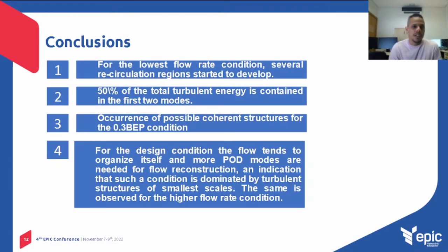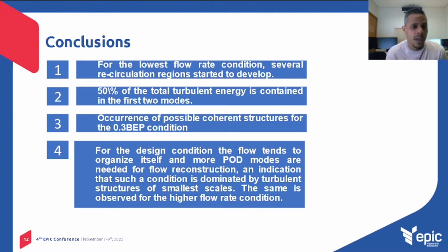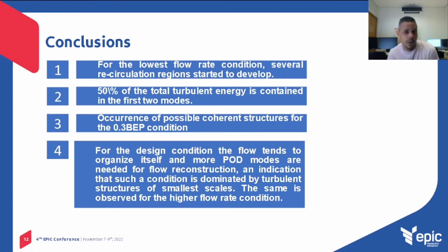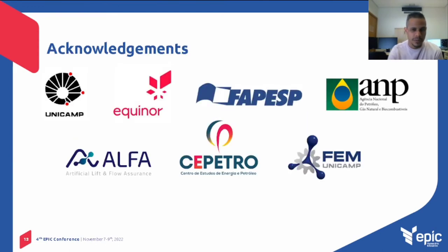As conclusion, for the lowest flow rate condition, several recirculation regions start to develop. For the 0.3 BEP, 50% of the total turbulent energy is contained in the first two modes. Also at 0.3 BEP, we observe the occurrence of possible coherent structures of the flow. For the design condition, the flow tends to organize itself and more POD modes are needed for flow reconstruction, indicating that such a condition is dominated by turbulent structures of smaller scales. The same is observed for the high flow rate condition. Thank you very much.